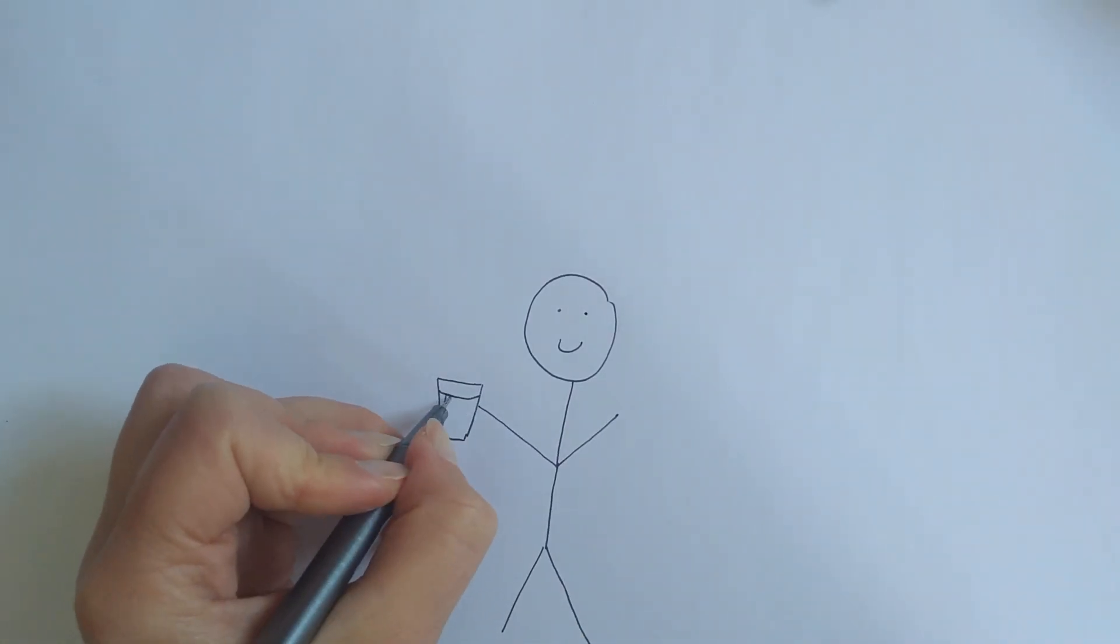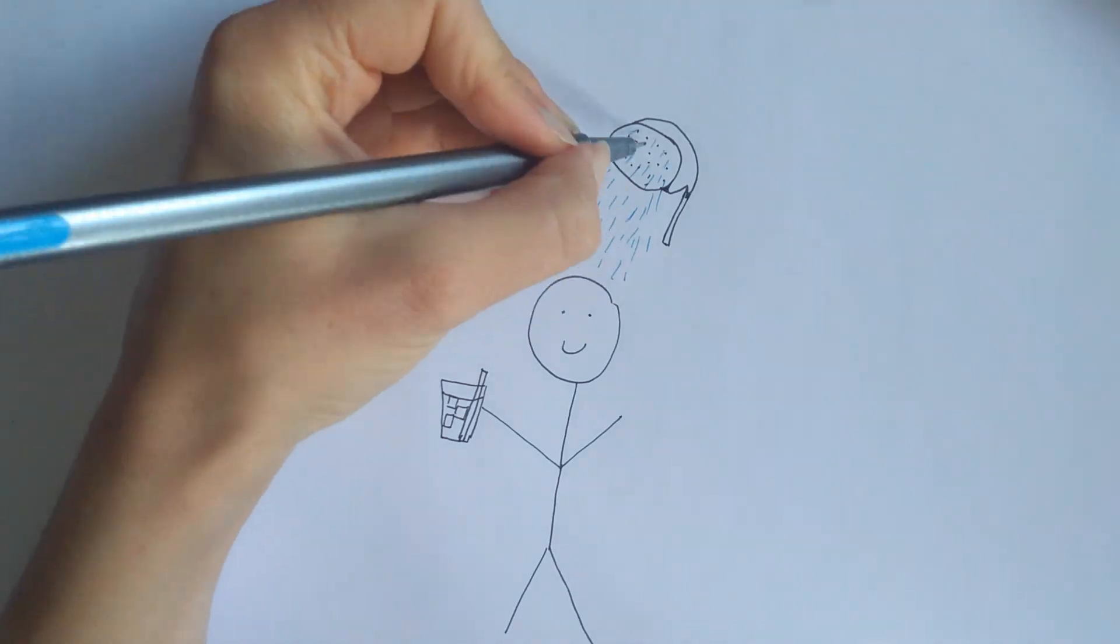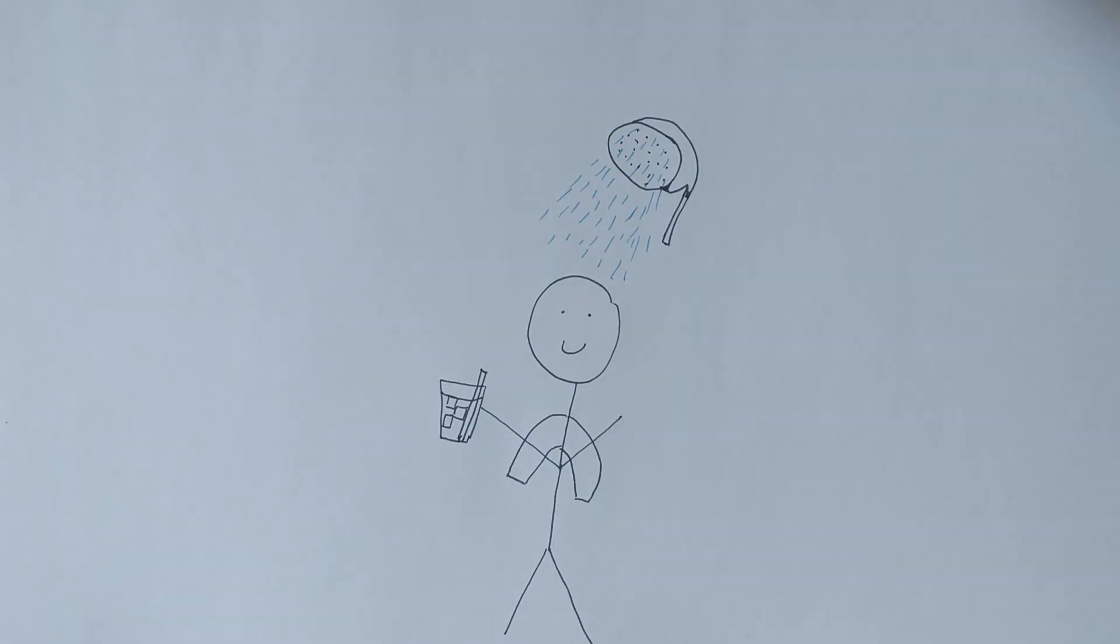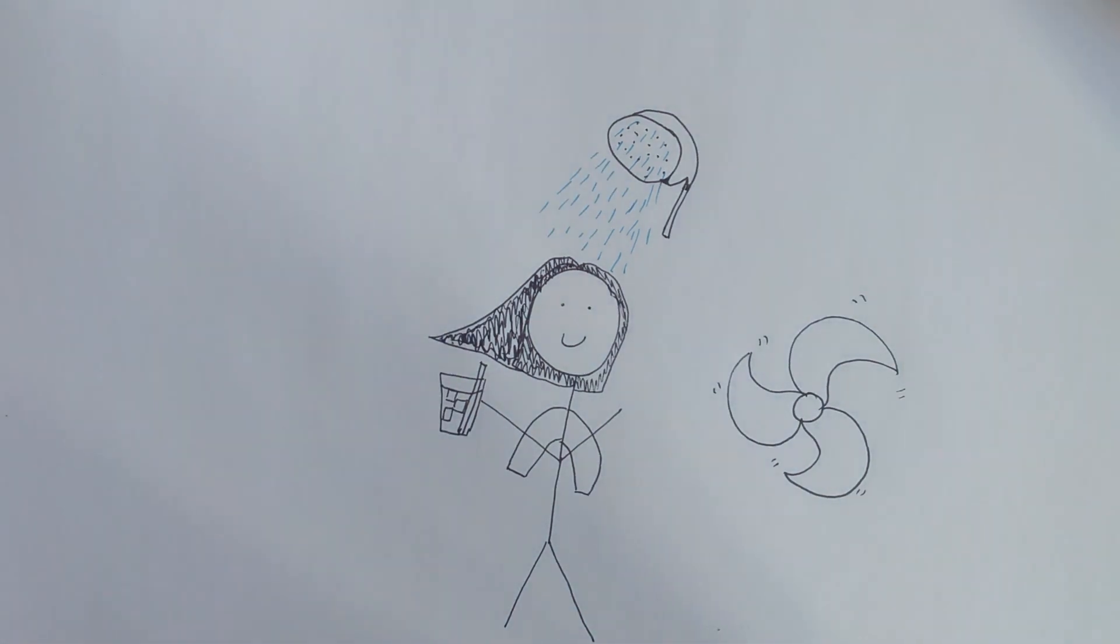And finally, keep your body cool. Stay hydrated with cool drinks and take cool showers or try putting a damp towel around your shoulders. If you're still too hot, try using a fan. These use a lot less energy than aircon.